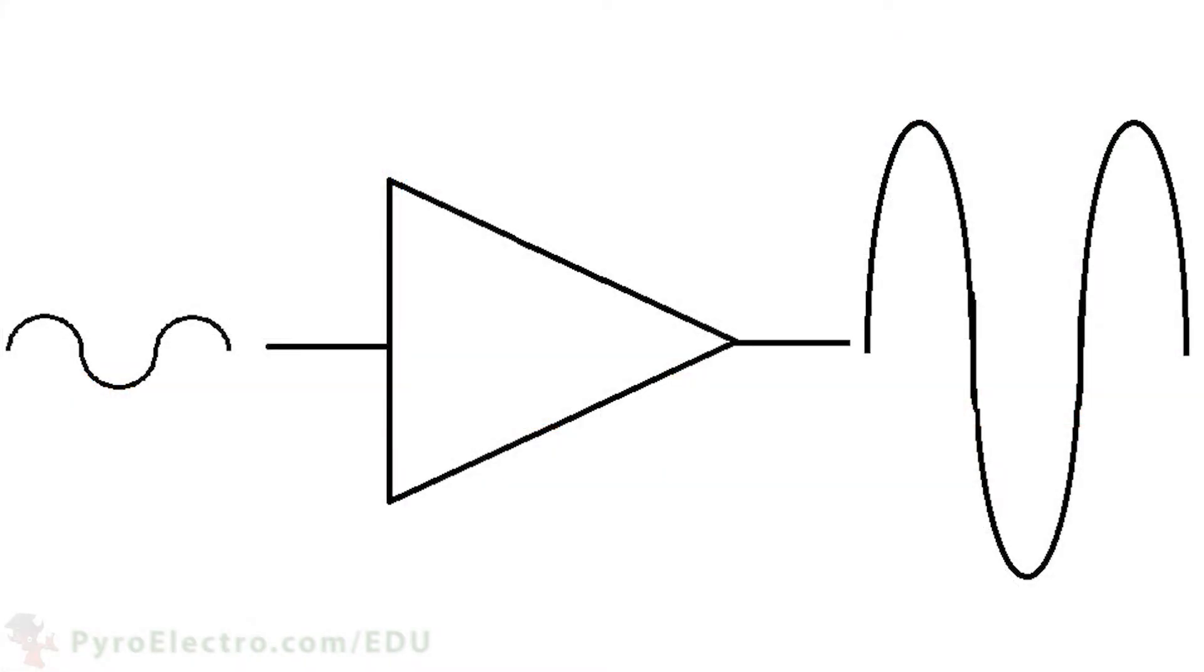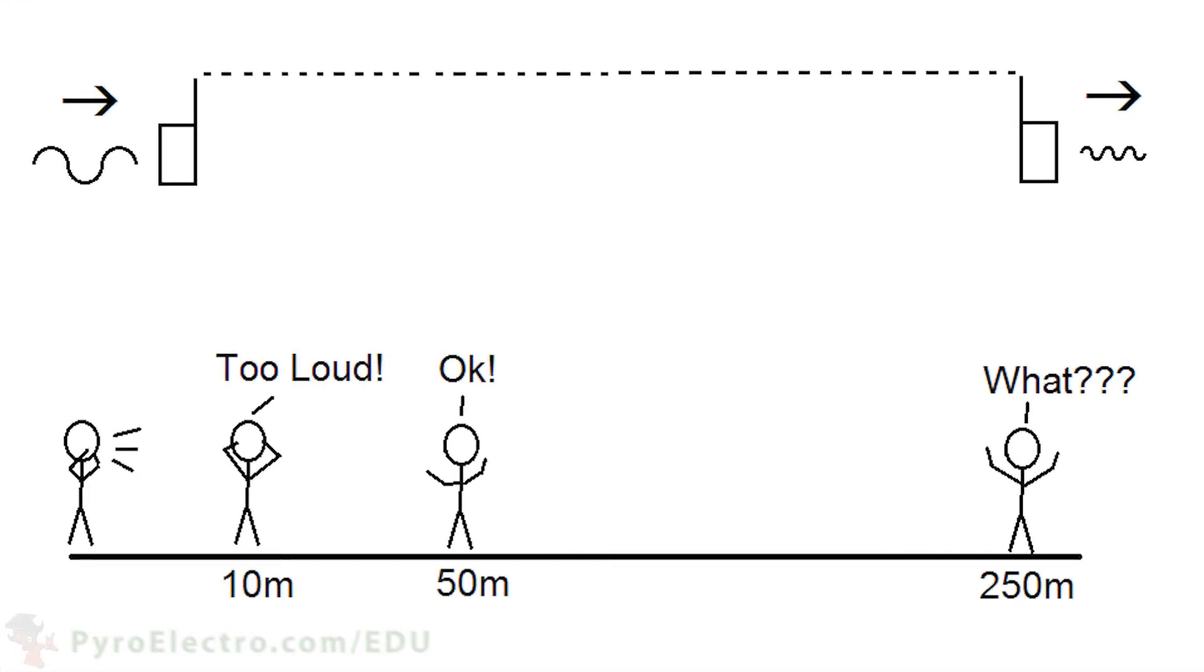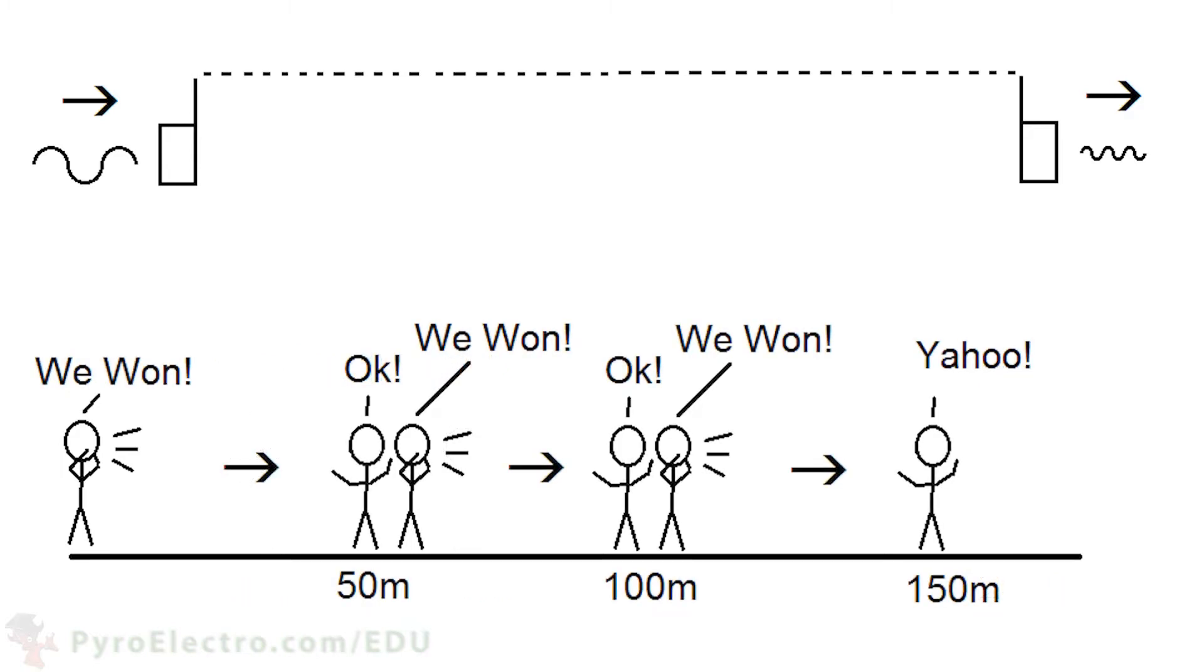As we learned before, sometimes an electric signal becomes too weak when it is transmitted over great distances, just like the sound of your voice yelling at someone who is far away. And the solution to that is to have something to amplify and repeat the signal to the receiver.